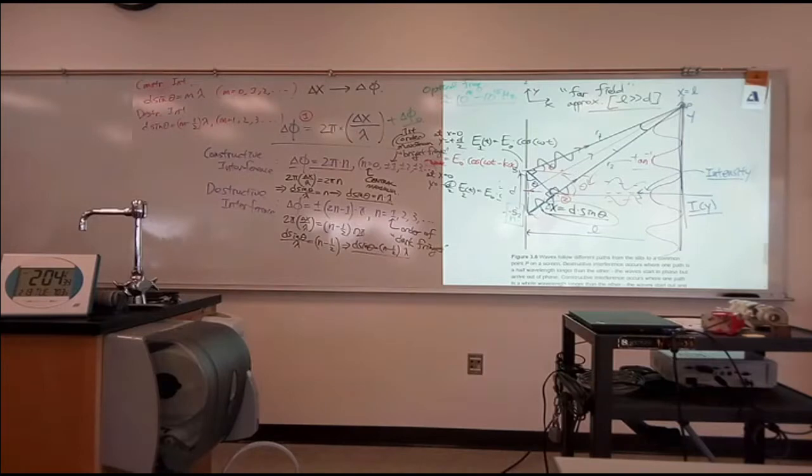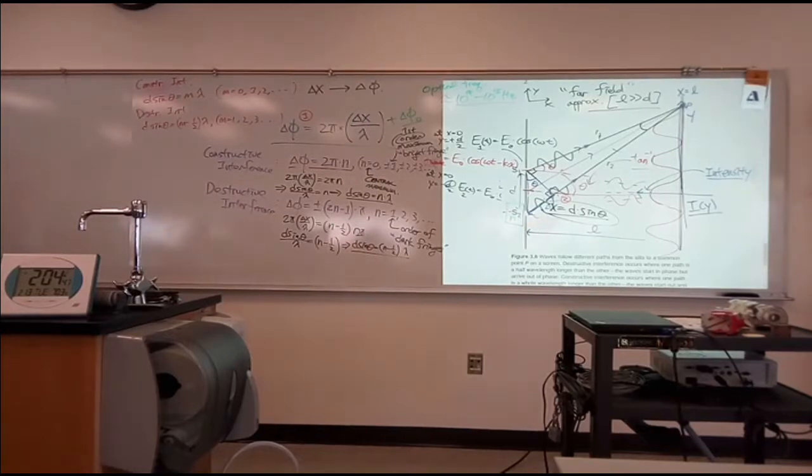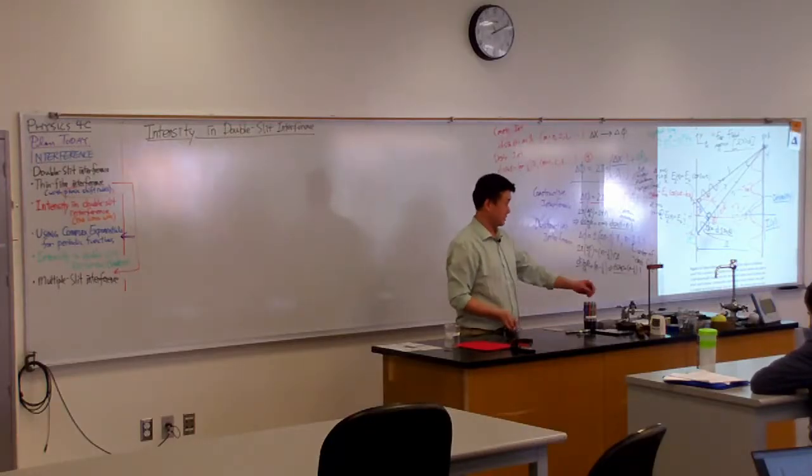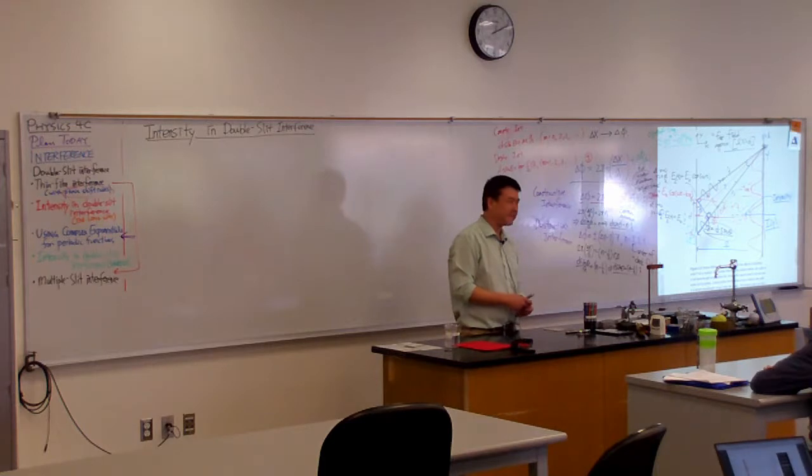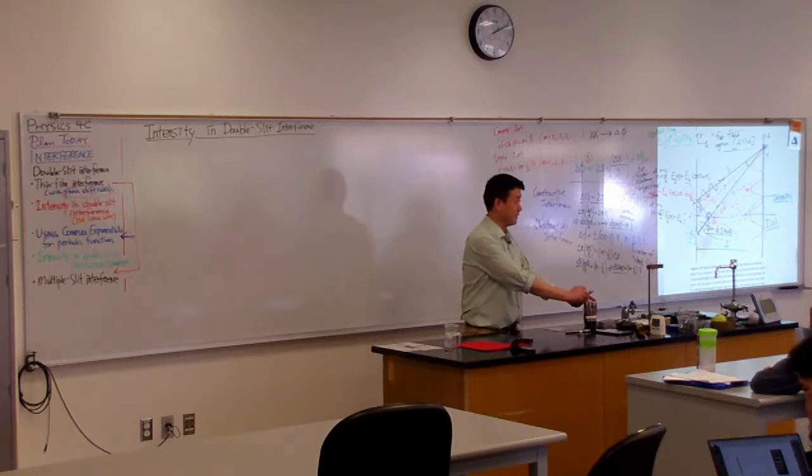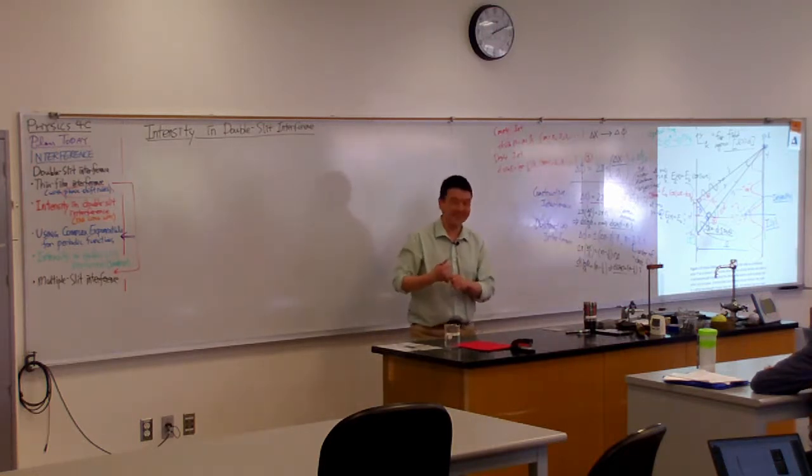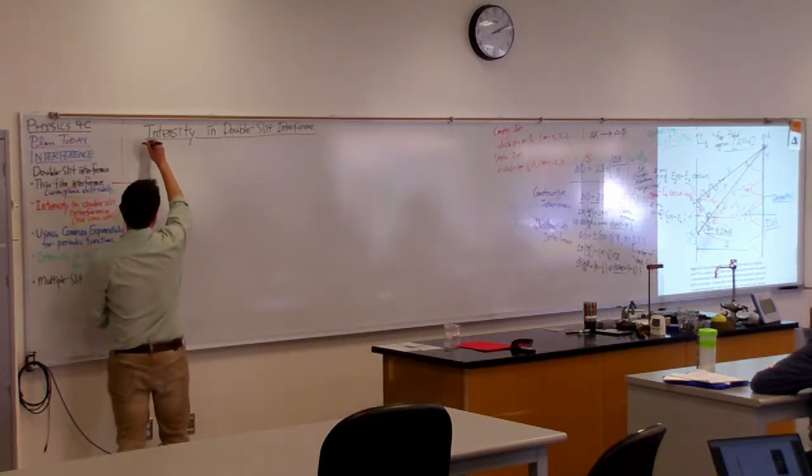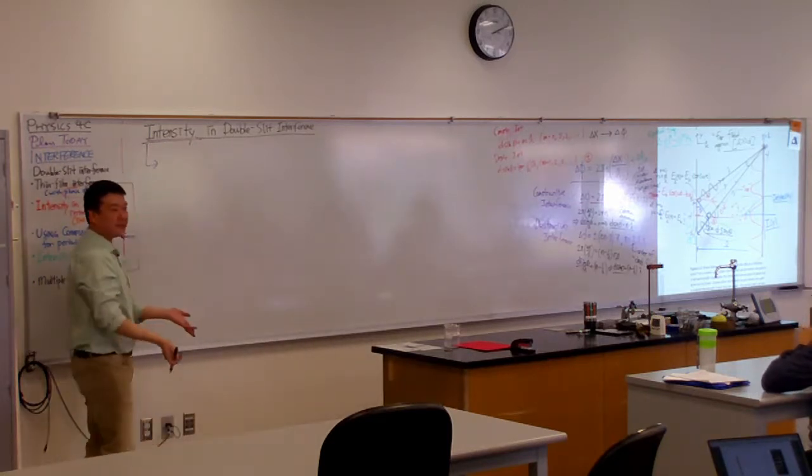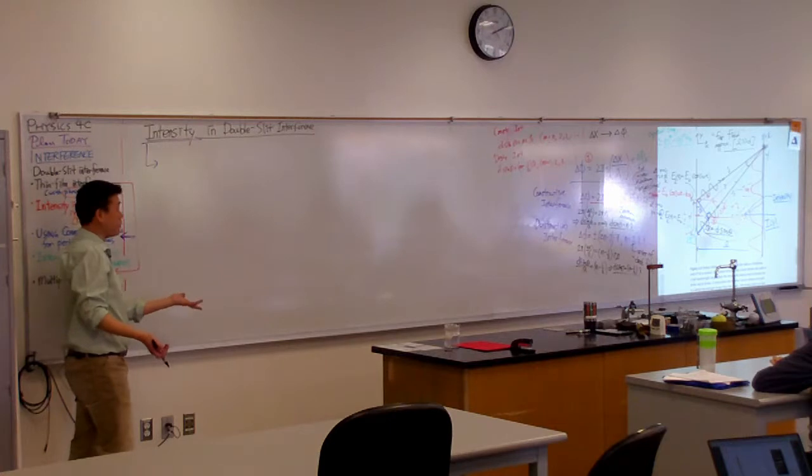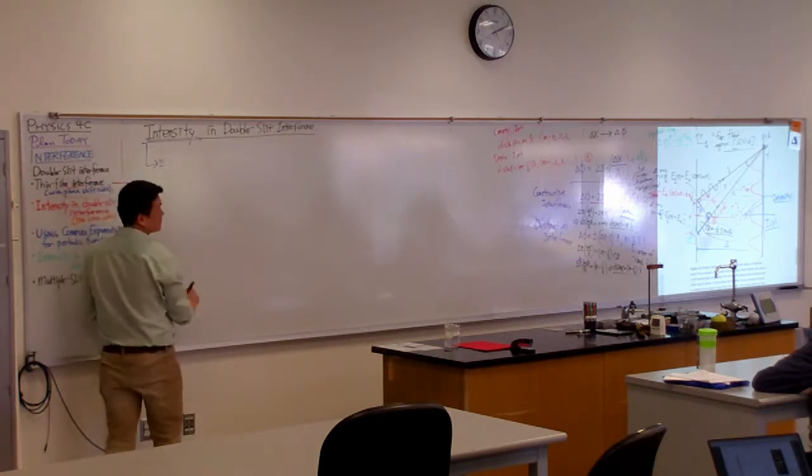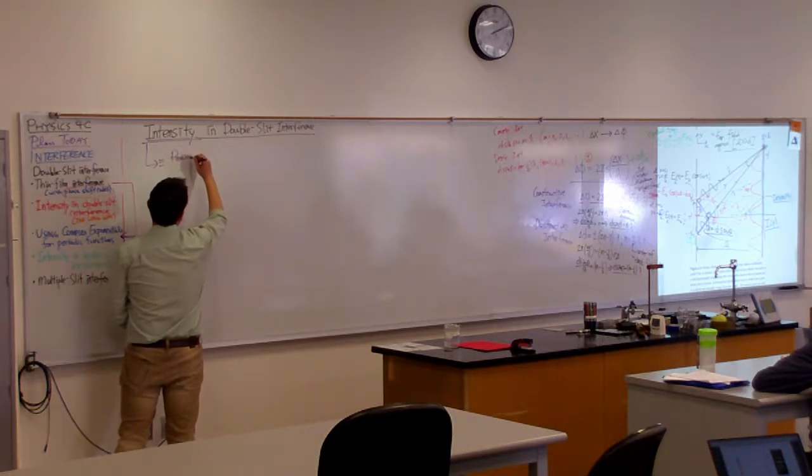And so before we go headlong into the whole calculation, let me just step you through a couple simplifying conventions. So is everyone here familiar with the definition of intensity in physics? I probably didn't cover it in Physics 4B. So let me define the word intensity. Intensity in physics, you can talk about intensity of light. You can actually talk about intensity of other things as well. Intensity is defined as this: power per area.